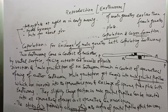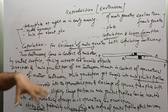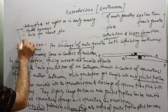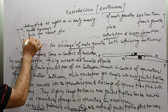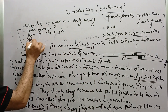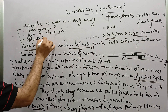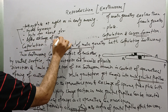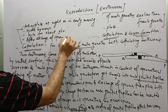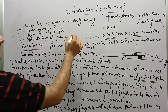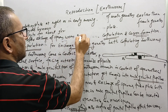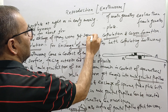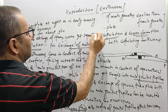After exchange of sperm, the earthworms get separated from each other.